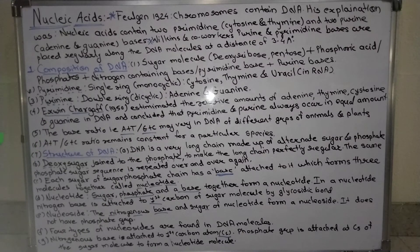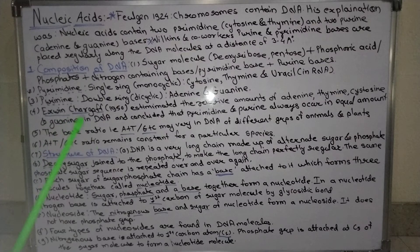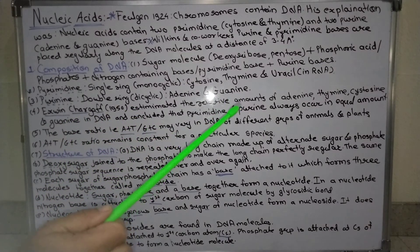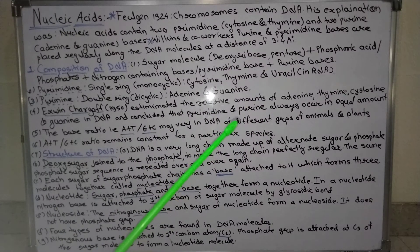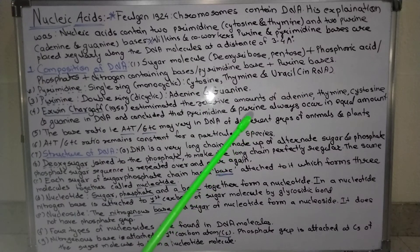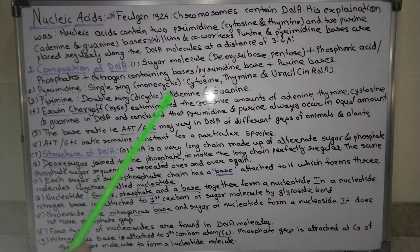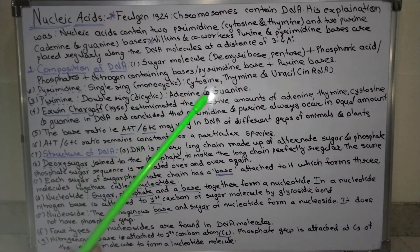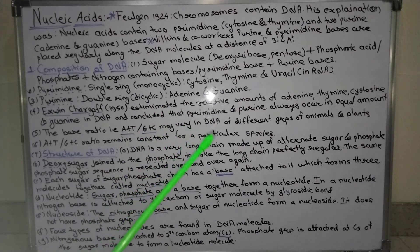Erwin Chargaff in 1950 estimated the relative amounts of adenine, thymine, cytosine, and guanine in DNA and concluded that pyrimidines and purines always occur in equal amounts. The amount of adenine, thymine, cytosine, and guanine in DNA is always equal - meaning the total pyrimidine bases equal the total purine bases.